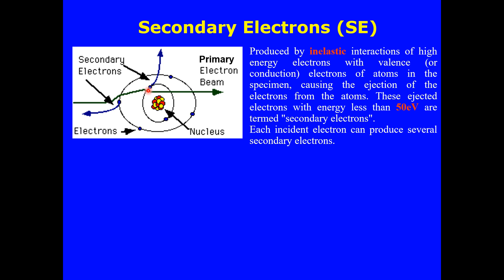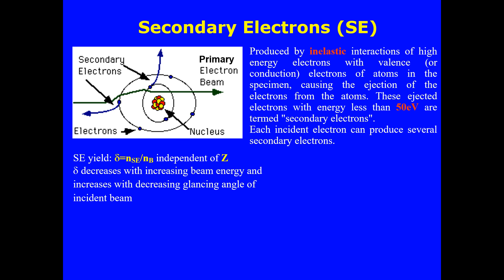These ejected electrons with energy less than 50 electron volts are termed secondary electrons. Each incident electron can produce several secondary electrons, and as these electrons are emitted they can also cause further electron emission from the atom, and this process may continue. The secondary yield, denoted by δ, equals the density of secondary electrons divided by the density of the beam electrons, and it is dependent on atomic number.